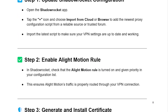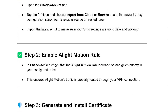Step 2: Enable the Alight Motion rule. In Shadow Rocket, check that the Alight Motion rule is turned on and given priority in your configuration list. This ensures Alight Motion's traffic is properly routed through your VPN connection.